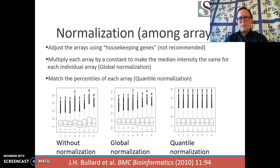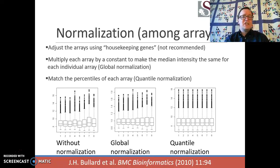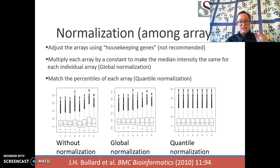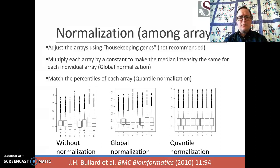You will frequently hear people talking about housekeeping genes as a way to do normalization — the idea being that 10 to 15 genes are always on and nothing really alters their expression. People say that if you sum the intensities for those genes and divide everything else in the sample by those measurements, you will have normalized correctly. However, continued research has found that housekeeping genes don't really exist. Basically all genes will respond under some conditions, so assuming some genes are truly unchanged across samples is not a very practical approach.